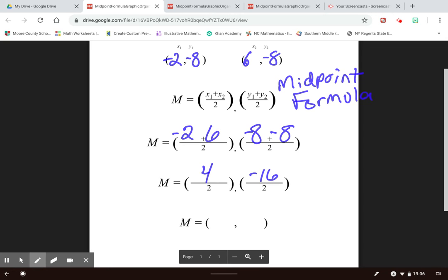So 4 divided by 2 is going to be 2, and negative 16 divided by 2 is going to be a negative 8. So that means the midpoint between these two ordered pairs is 2, negative 8.